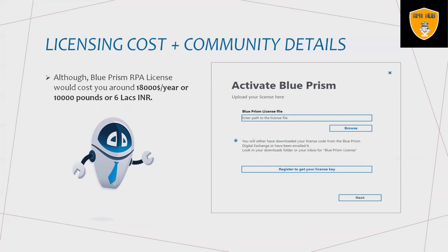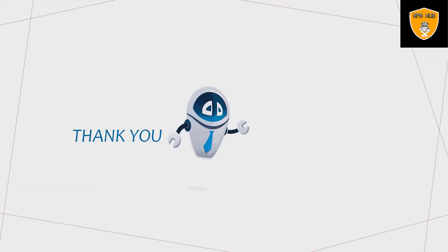The licensing cost of Blue Prism is around six lakh Indian Rupees, which is approximately $18,000 per year. This is a yearly-based license that can be reviewed based on requirements. Community versions are also available for one month, where anyone who wants to get started can opt for the community version for practice. That's all about Blue Prism — hope you enjoyed this content. Subscribe to the channel for more amazing content. Thank you for watching.